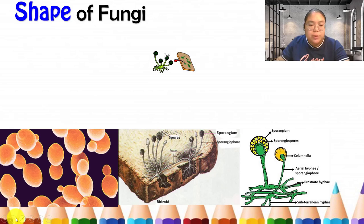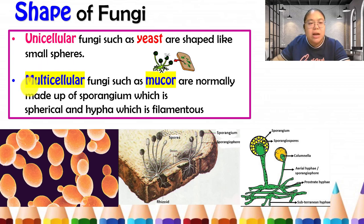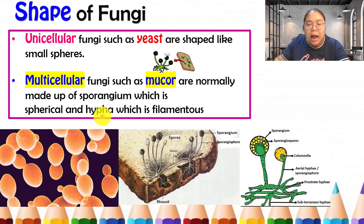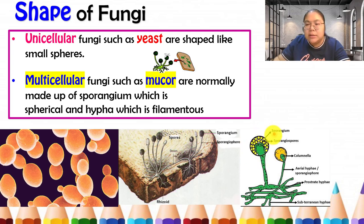Now the shape of fungi. We have two types. Unicellular fungi, like yeast, are shaped like small spheres. Multi-cellular fungi, like mucor, are made up of a sporangium — a spherical, round shape — and hyphae, which are the filamentous, branching structures at the bottom. You can see the example: this is yeast, and after viewing under a microscope you can see mucor with its plant-like structure and the spherical sporangium.